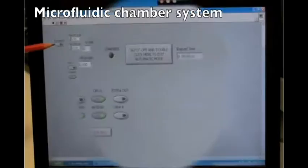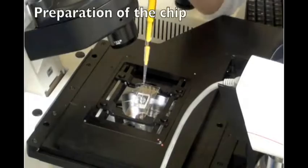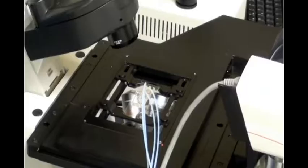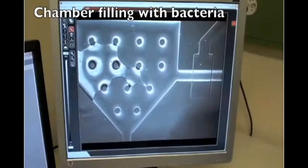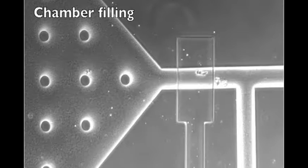This is the LabVIEW program that controls the opening and closing of the valves. Now we connect all the tubing and inject the cells in the chip. We are filling the chamber with the cells. When we want to give nutrients to the cells, we open the valves before and after the chamber.